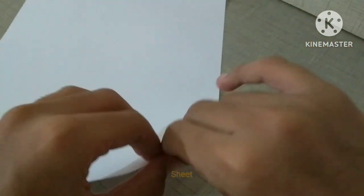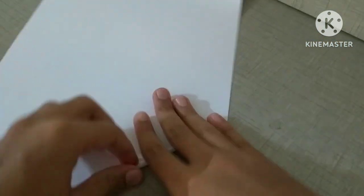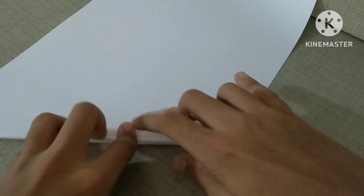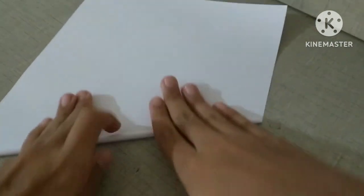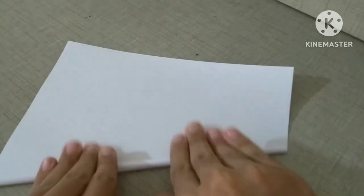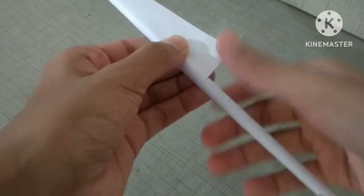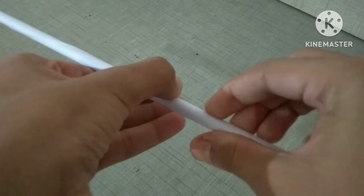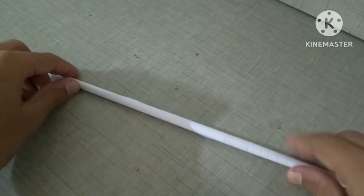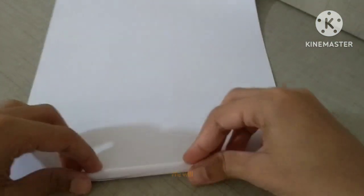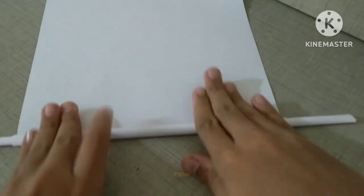We will start by rolling a sheet of paper. Now we will roll this paper tube along another paper.